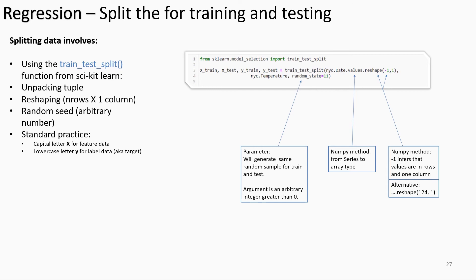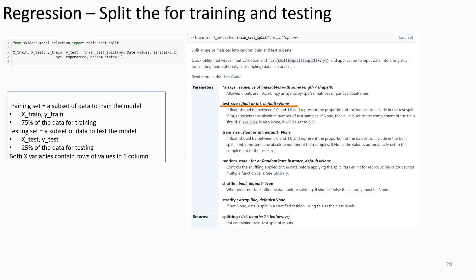The variable names assigned are standard practice: feature data for train and test sets is denoted using a capital X, and target data uses a lowercase y. Leaving the default arguments as-is means the data split for train and test subsets will be 75% and 25% respectively, ensuring that most data is used to train the model for reliability purposes.